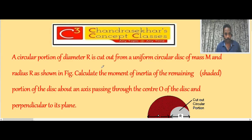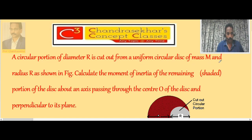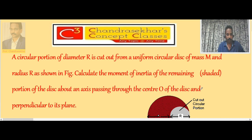A circular portion of diameter R is cut out from a uniform circular disk of mass M and radius R, as shown in the figure. Calculate the moment of inertia of the remaining portion of the disk about an axis passing through the center O of the disk and perpendicular to its plane.